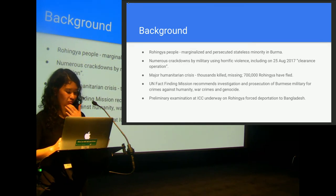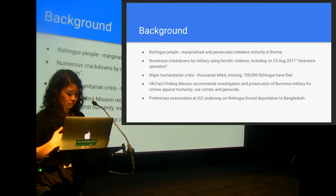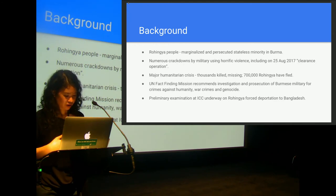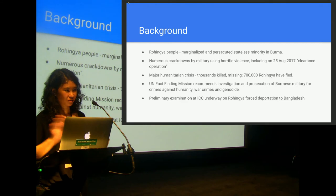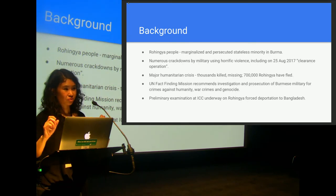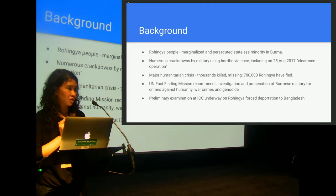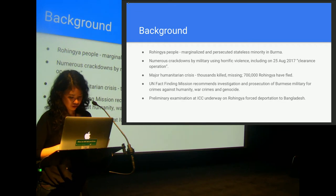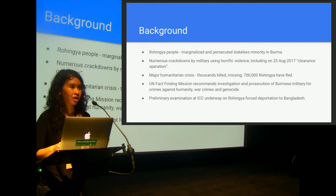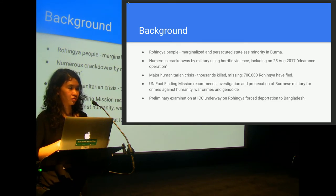The Rohingya people are a marginalized and stateless minority in Burma. There have been numerous crackdowns by the military since 2011, including in August 2017, a so-called clearance operation involving massive widespread violence. It's a major humanitarian crisis — thousands of people have been killed, and over 700,000 Rohingya have fled. A recent UN fact-finding mission has recommended investigation and prosecution of the Burmese military for crimes against humanity, war crimes, and genocide. Right now, the ICC has a preliminary examination underway looking into the forced deportation of Rohingya to Bangladesh.